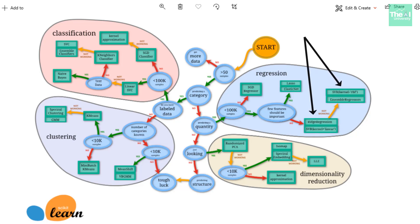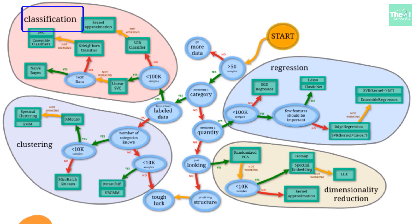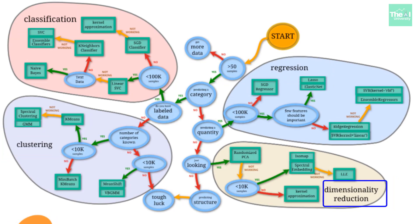The green rectangular boxes are individual algorithms in a specific category. We have specific categories like classification, regression, clustering, and dimensionality reduction. I'm taking an assumption that you are already aware of what these categories are.